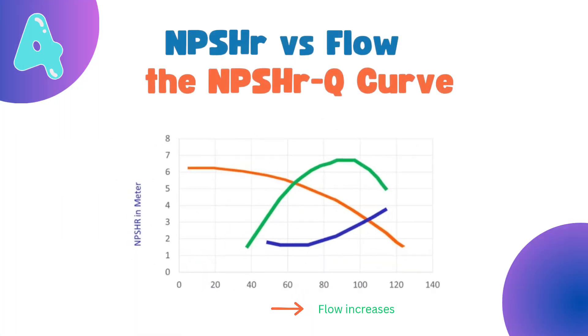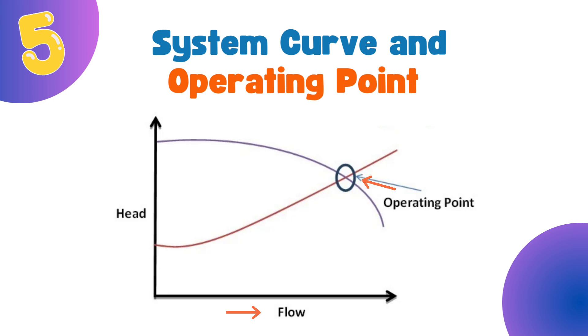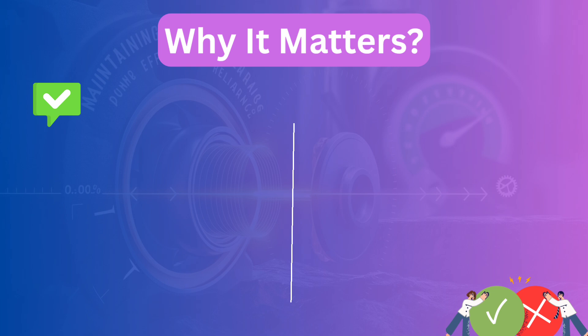Fourth, NPSHR vs. flow rate, the NPSHRQ curve. Net positive suction head required increases with flow rate. To avoid cavitation, the available NPSH must always be greater than the required. Fifth, system curve and operating point. When the pump curve intersects with the system curve, which represents piping and load, that's the operating point where your system will actually run.